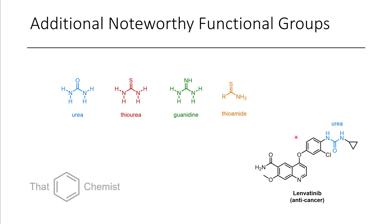I've also included here an anti-cancer drug which possesses a urea motif within it. Whether there's NHs or there's R groups coming off of the nitrogens, we still call them ureas, thioureas, or guanidines. They can be substituted, but for simplicity I've just drawn them as NH derivatives here.